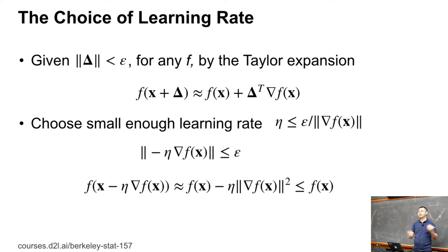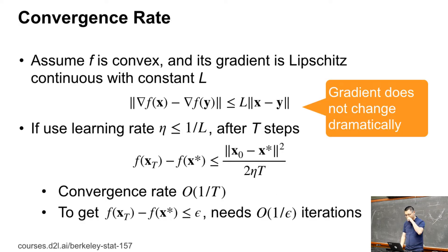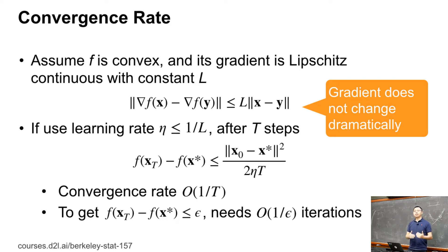In theory we guarantee decrease every step, but in practice we don't need to decrease the function value at every single step — decreasing overall is good enough. Another key concept in optimization is the convergence rate: how to measure the goodness of an optimization algorithm.